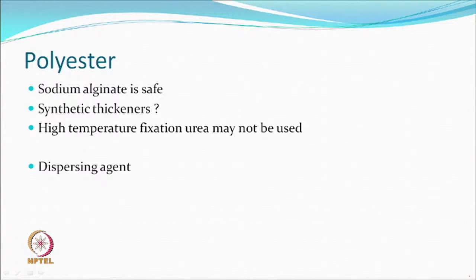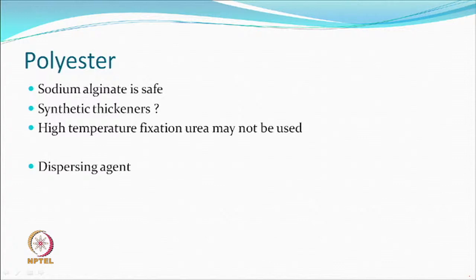For polyester, theoretically anything can be used as long as you are sure it can be washed off. Generally pH is safe, so synthetic thickeners can also be used as long as you can control their viscosity. Because high temperatures are used, urea vapors may be an issue, so you may use very little urea or none at all. There should be some dispersing agents in the ink itself, but you may also add something during the padding process.